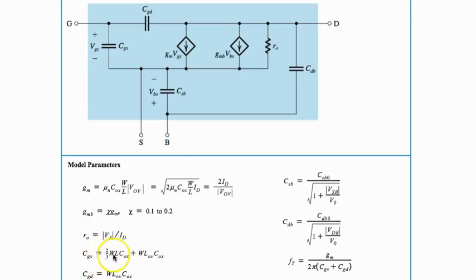C_GS is 2/3 W L C_ox plus W L_ov overlapping C_ox. C_GD is W L C_ox. C_SB and C_DB for FET is g_m over 2π times 5 C_GS plus C_G.